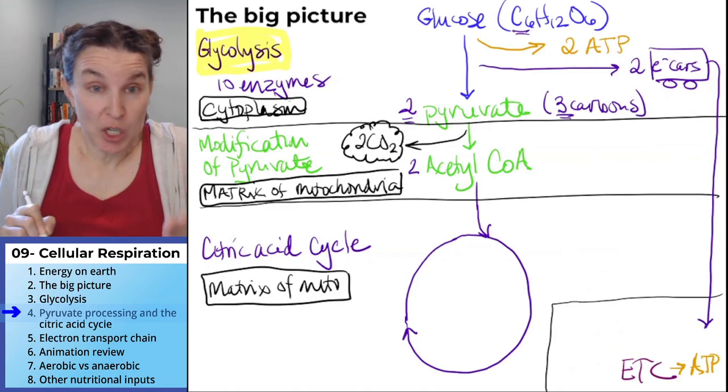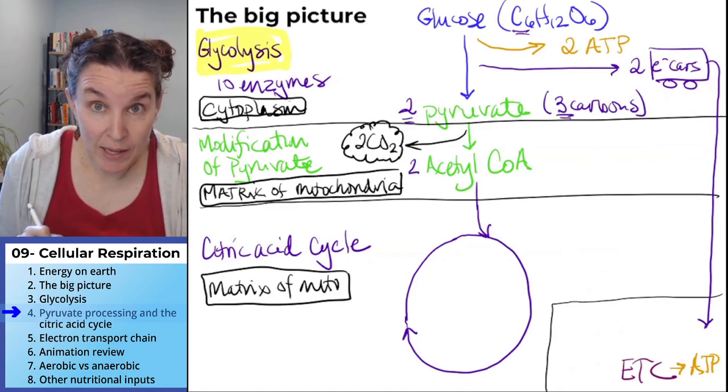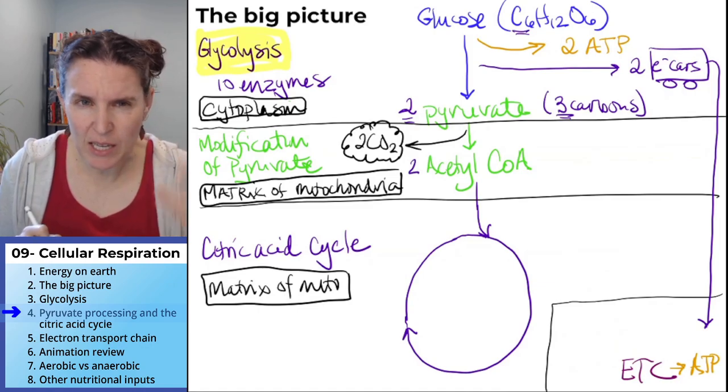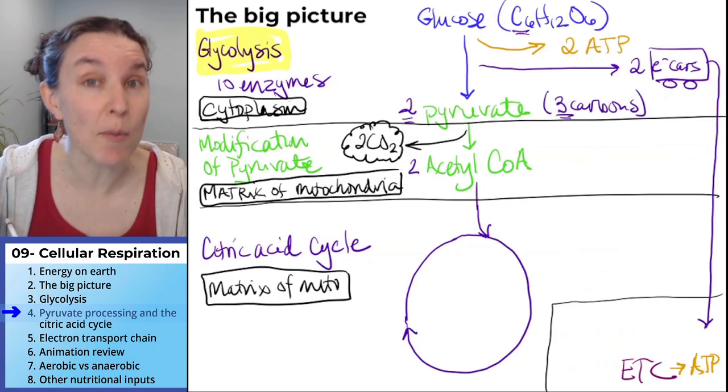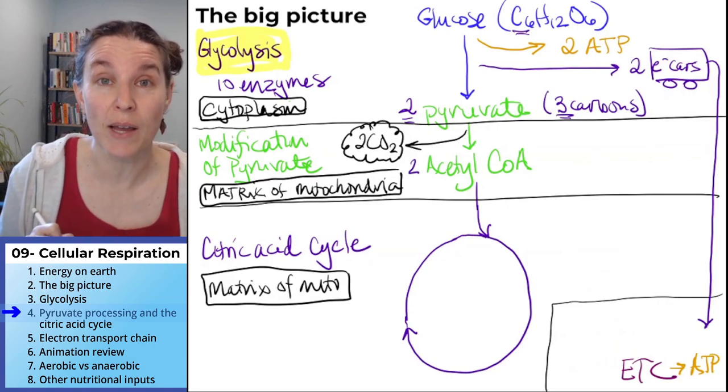We took two pyruvates. We turned them into two acetyl-CoA's plus two carbon dioxides. So my question for you is, how many carbons do you think acetyl-CoA has?